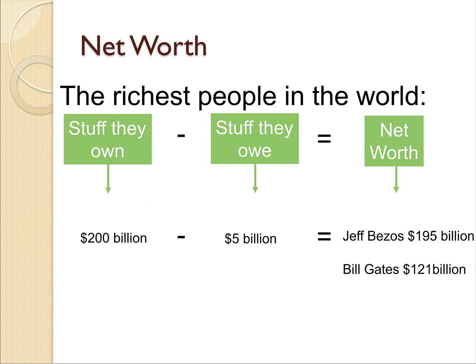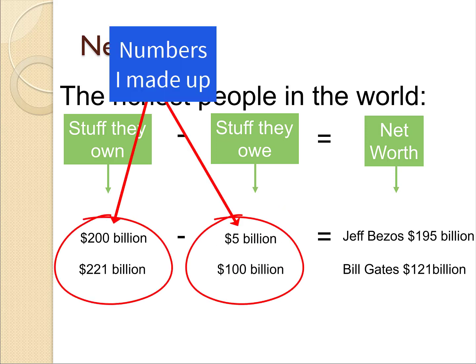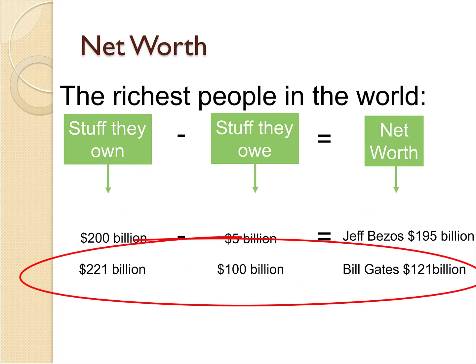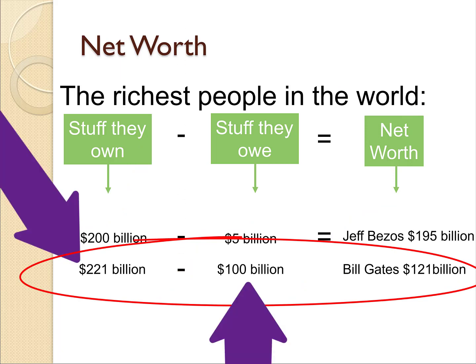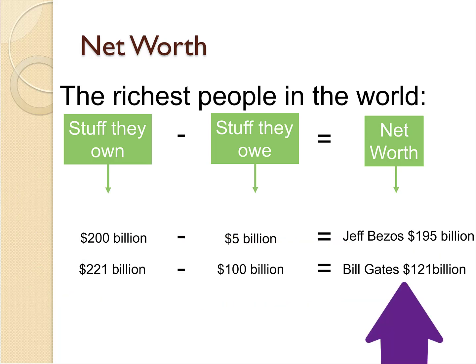Now maybe Bill Gates owns more stuff than Bezos. Let's say he has 221 billion dollars of stuff that he owns — considerably more than Bezos — but he must owe a lot. In fact, he must owe 100 billion. I made up the 221 billion and the 100 billion amounts, but the net worth is real as of today. So 221 billion minus 100 billion gives Bill Gates a net worth of 121 billion. What really matters is not how much stuff you own, but what your net worth is, at least as far as this list is concerned.